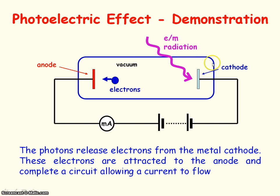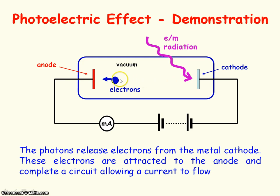A photocell can also be used to demonstrate the photoelectric effect, where electromagnetic radiation is incident on a metal cathode. Electrons are released and attracted to the positive anode, causing a current to flow through the circuit. The current is proportional to the number of electrons arriving at the anode per second.